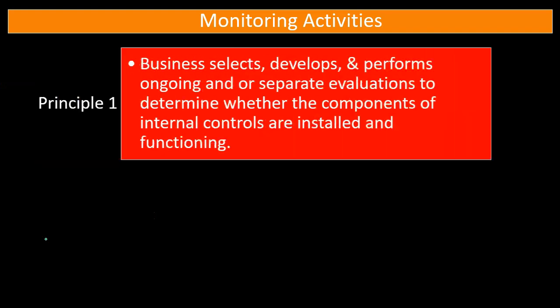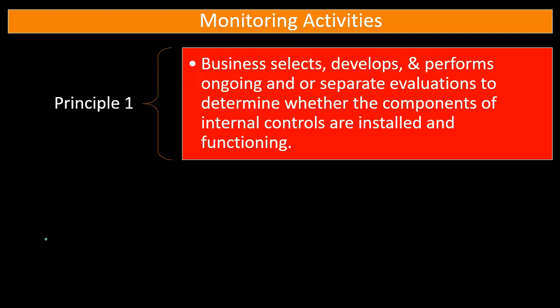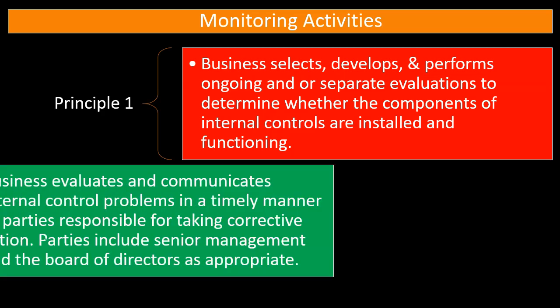Next, monitoring activities and their related principles. Principle number one: the business selects, develops, and performs ongoing and/or separate evaluations to determine whether the components of internal controls are installed and functioning. We think about the risks, come up with a plan, implement control activities, communicate the information, and then monitor to see if the internal control processes are set up and implemented well and doing what we expect.